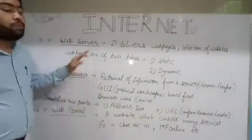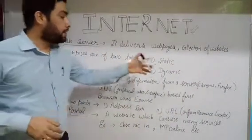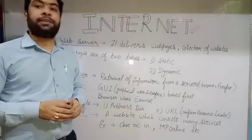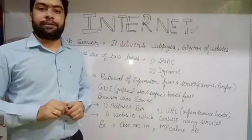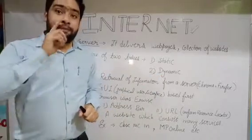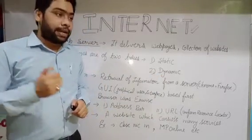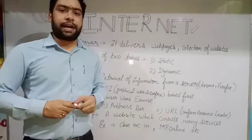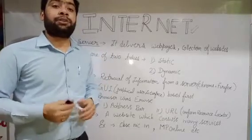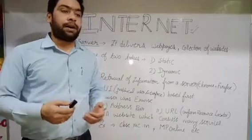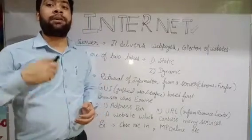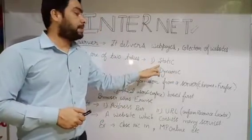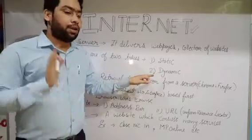Web pages are of two types: static and dynamic. Static means the data placed on the web page is stored permanently and does not change. Dynamic means the data changes continuously — as seen on websites like railways, Amazon, or Flipkart, where data changes after a certain period or after refreshing. These are the two types of web pages: static and dynamic.